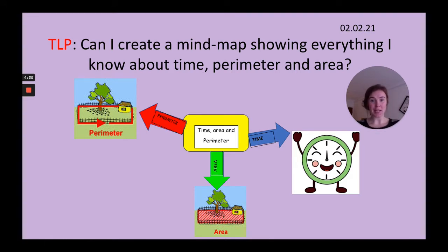So first of all we need to draw out our mind map. We need one arrow with time like you can see here, one with area and one with perimeter and we need to think about everything we know about these three areas.